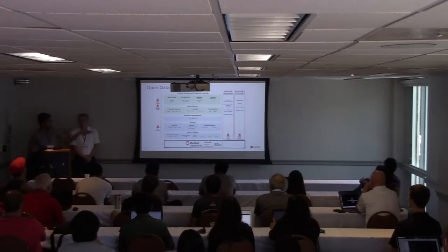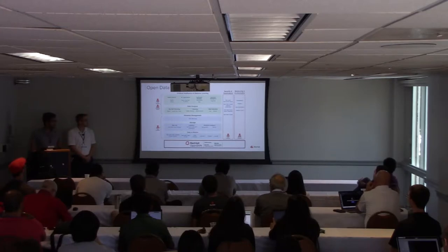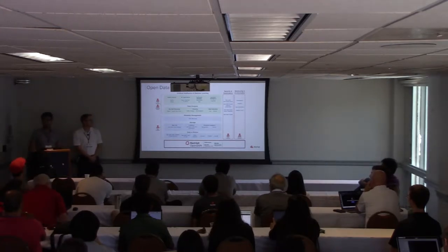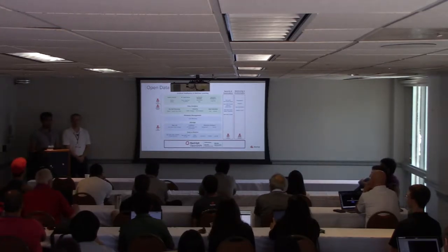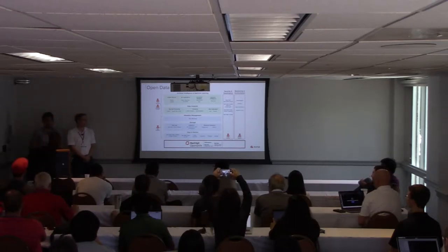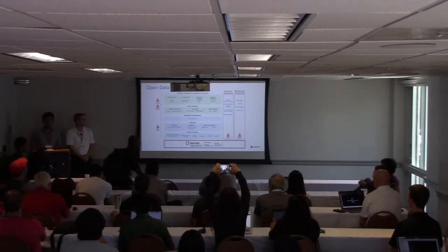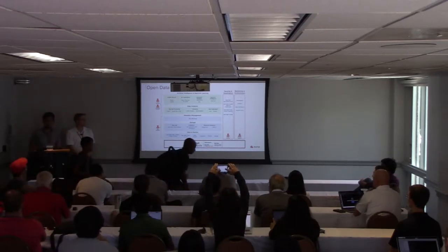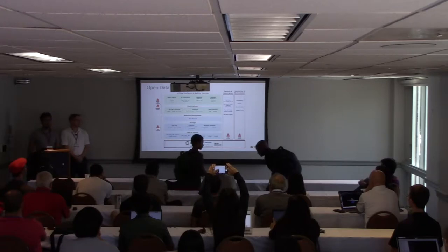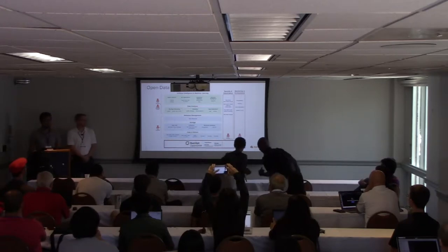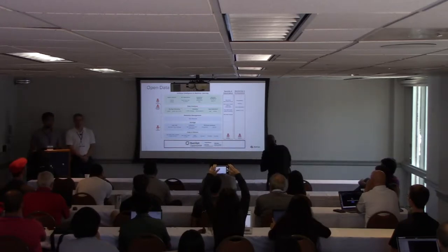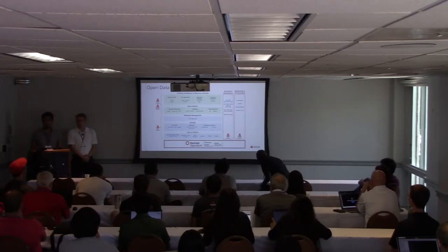If you draw your attention to the bottom of the image, you'll see OpenShift. OpenShift is Red Hat's enterprise Kubernetes distribution — it's a container orchestration engine, and that's what we're running the Open Data Hub on. This is what lets us scale up to meet any requirements or run on any cloud.